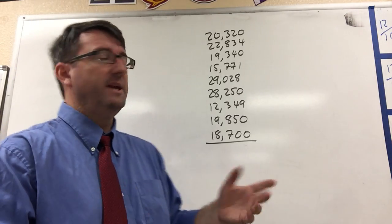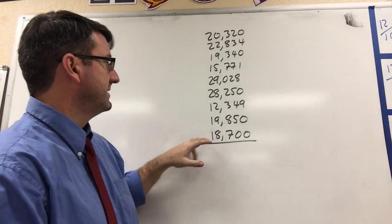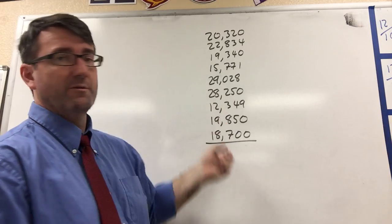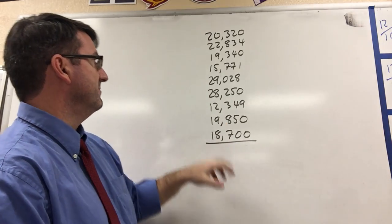So to find the mean, we just add up all the numbers, divide by however many there are, and that'll give us the mean.